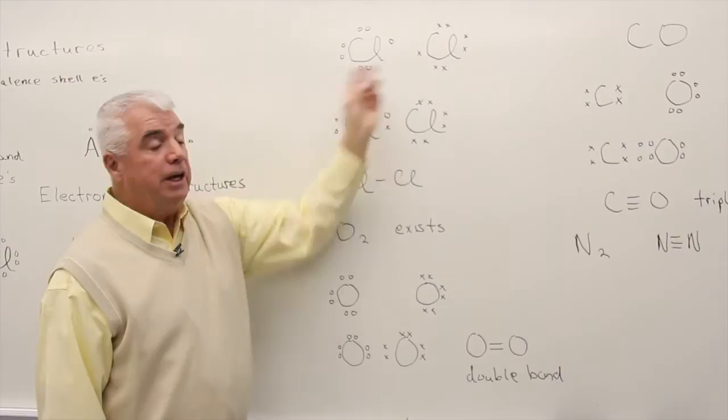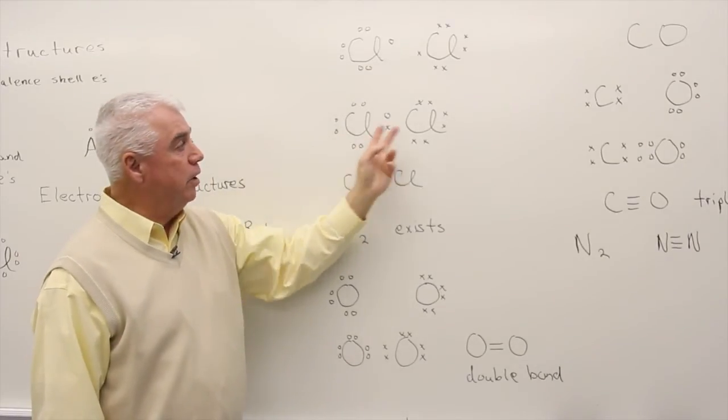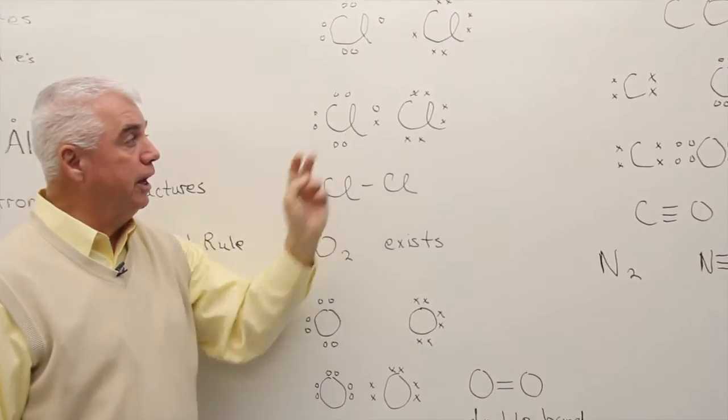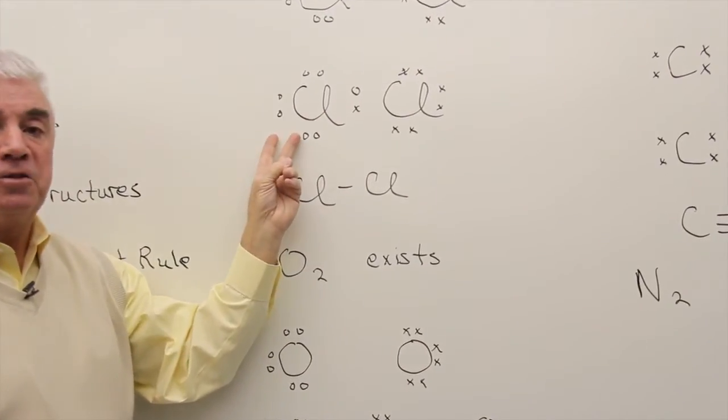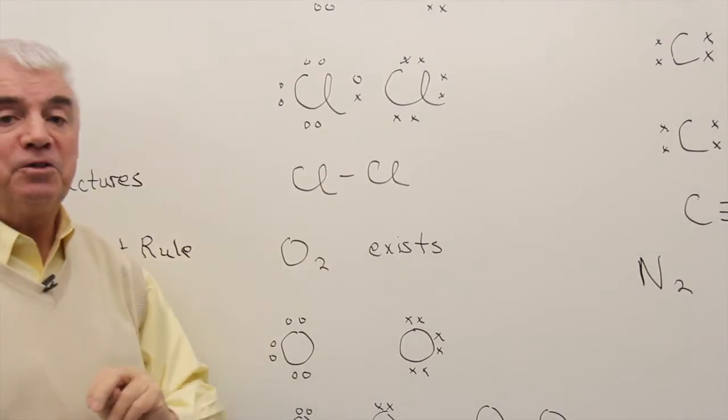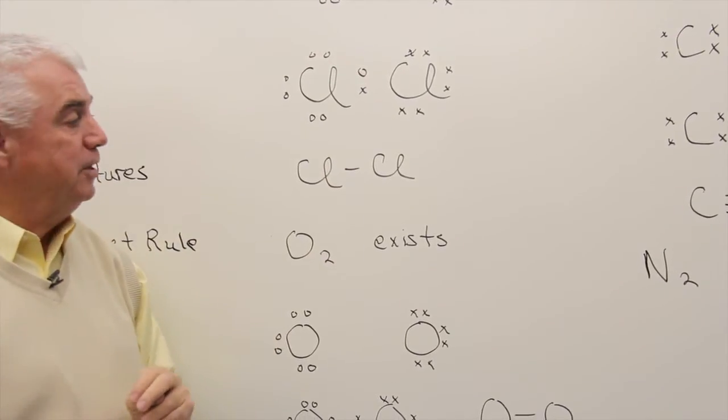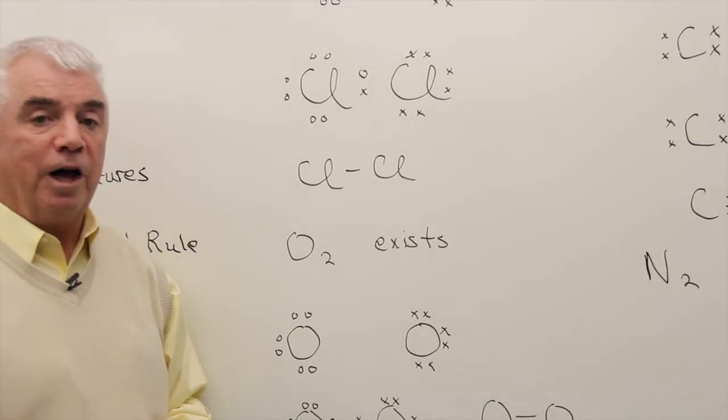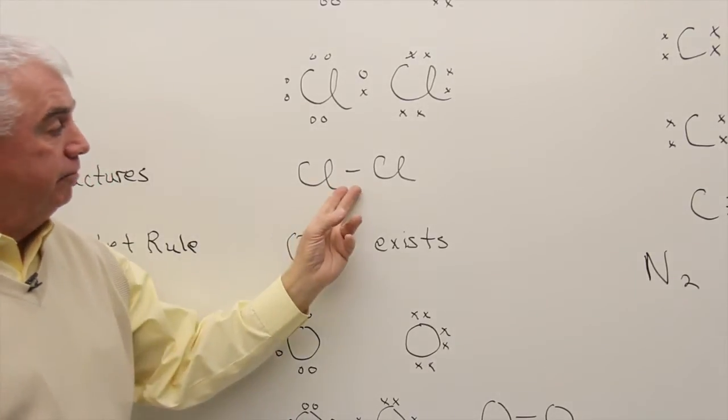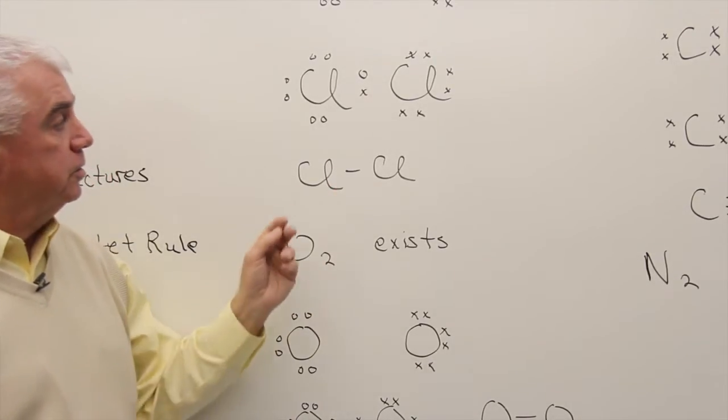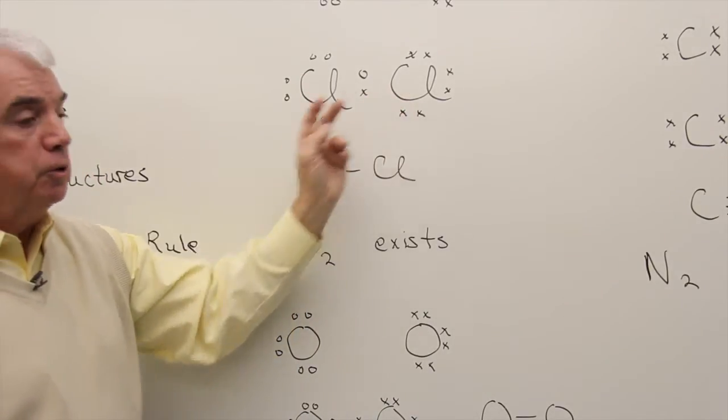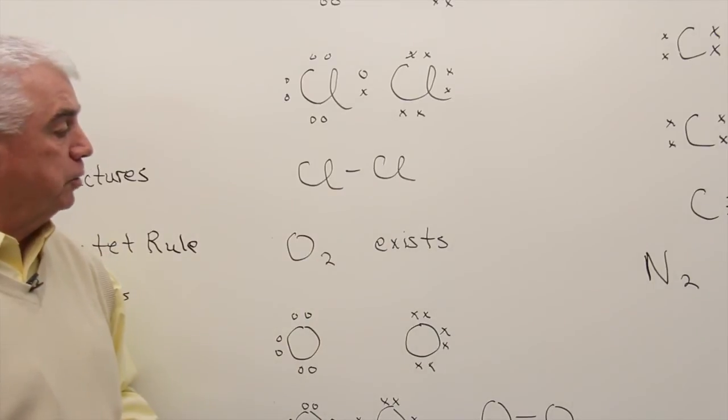They each need one more electron. And so here, I've drawn the structure showing them sharing two electrons. This chlorine thinks that it has eight. This one is happy with eight. It obeys the octet rule. And so two chlorine atoms work out this sharing of two electrons. We could call this the covalent bond structure. The electron dot structure and the covalent bond structure.